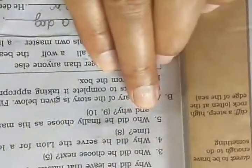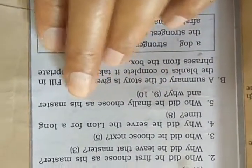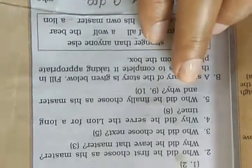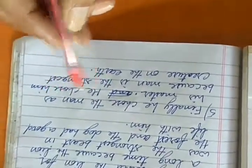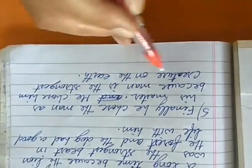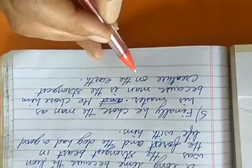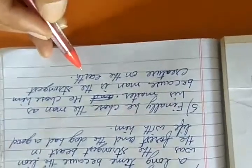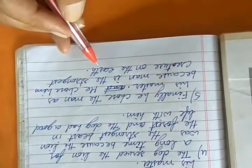Next question is, who did he finally choose as his master and why? Finally, he chose the man as his master. He chose the man because man is the strongest creature on the earth and he was searching for the strongest.